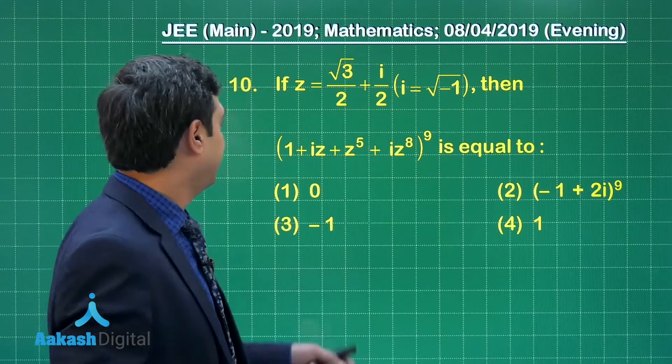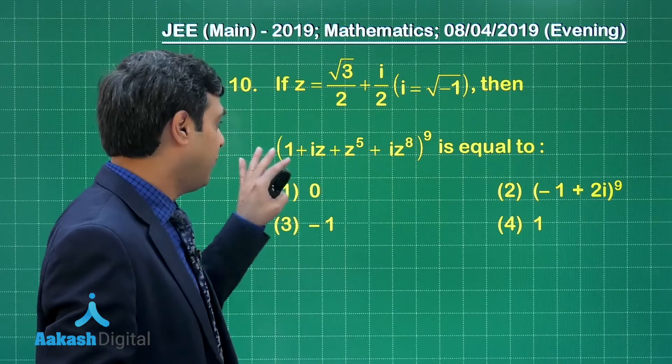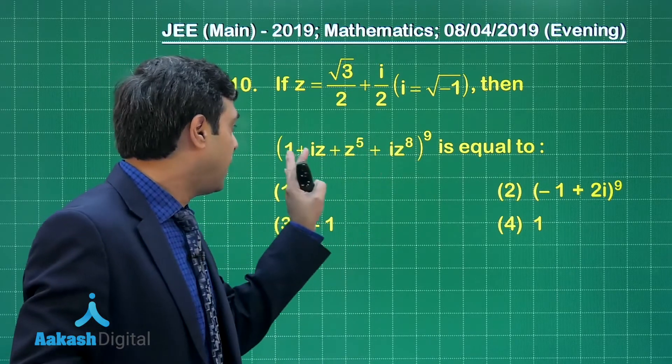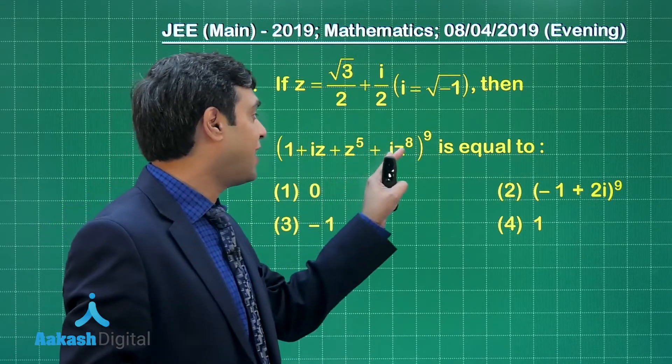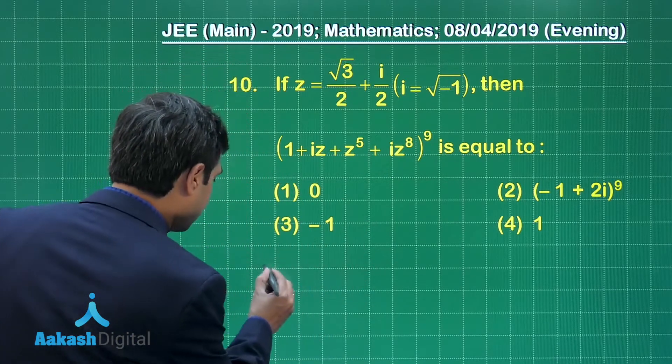Let us take question number 10. If z is √3/2 + i/2, then we have to find the expression (1 + iz + z⁵ + iz⁸)⁹. We have to simplify it. So let us start this question.